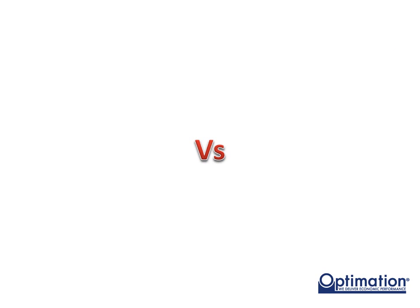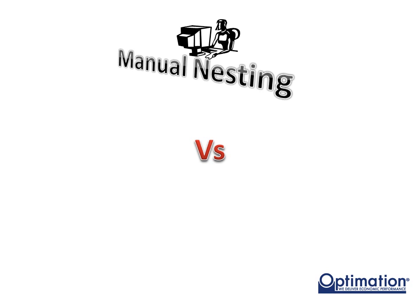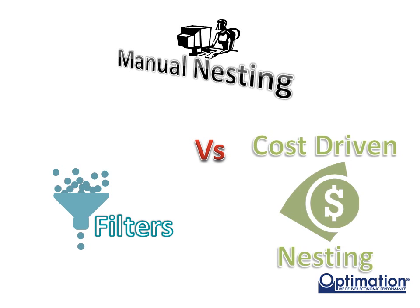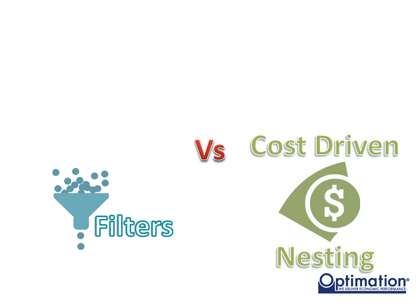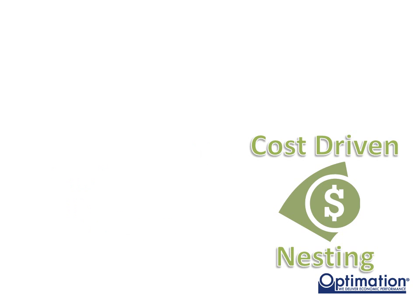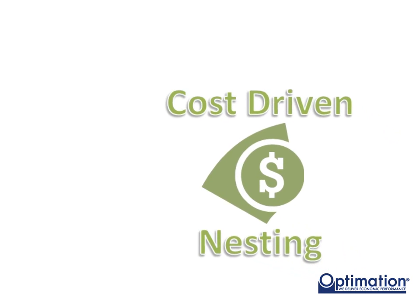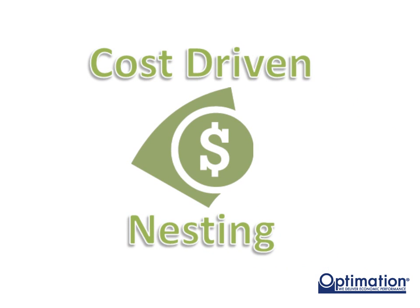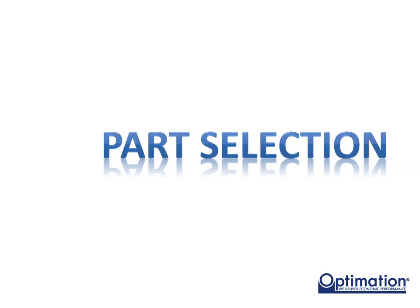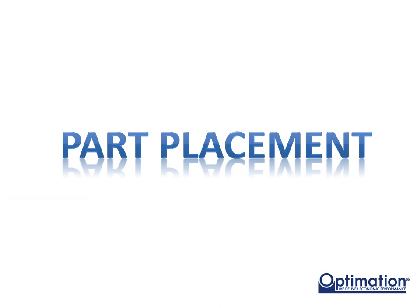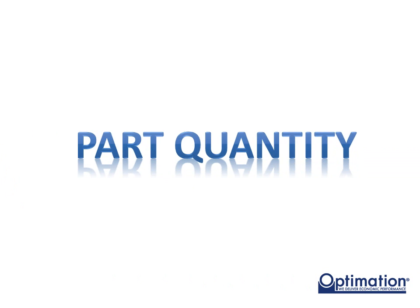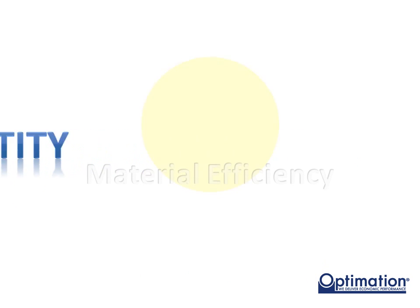Normally in these videos we would discuss the benefits of each method and the situations they would be appropriate for. But in this case, there is no good alternative to cost-driven nesting. Manual nesting costs too much in programming time and speed. Filters present too much of a trade-off between material usage and schedule. If you want to maintain high part quantities in your nesting system, select a cost-driven system. Between selecting which orders to nest, placing them correctly on the sheet, and keeping enough parts around to fill the sheet, your nesting system has several chances to help or hurt your material efficiency.